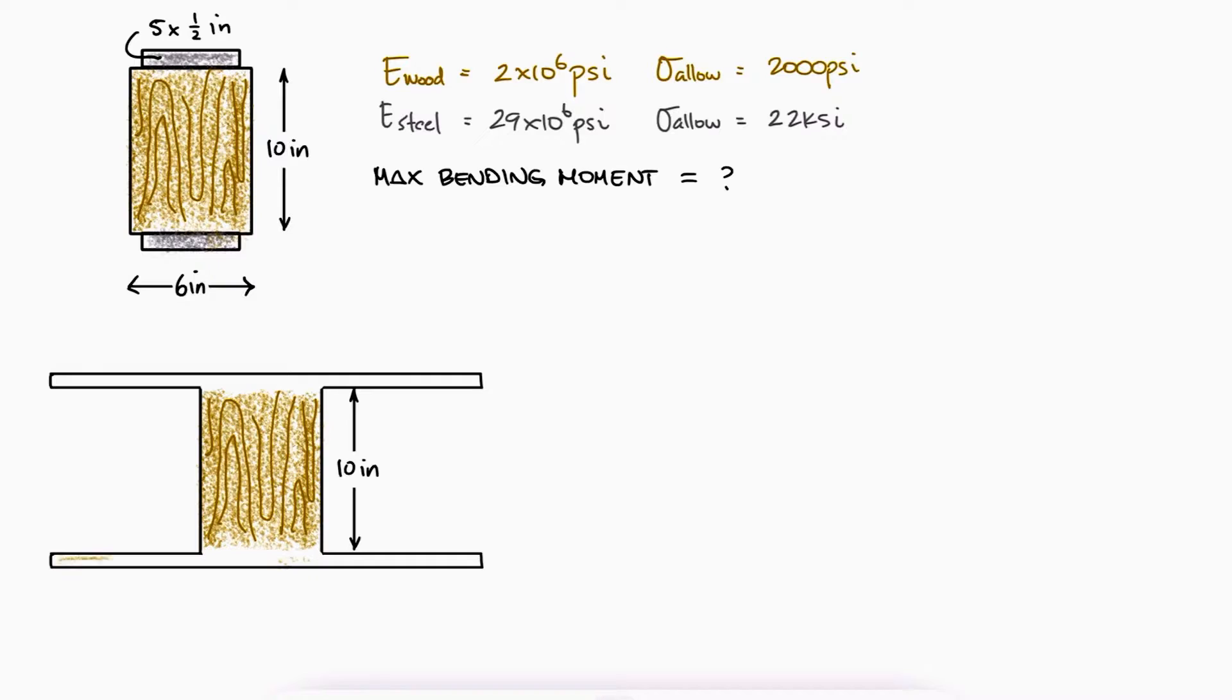If we transform the steel plates into wood, we would have an elastic moduli ratio of 14.5, which means that the width of the steel plates is now 14.5 times 5. The neutral axis would be right at the center since the cross-section is symmetric.